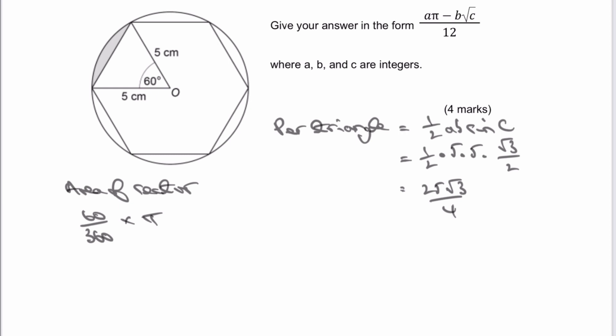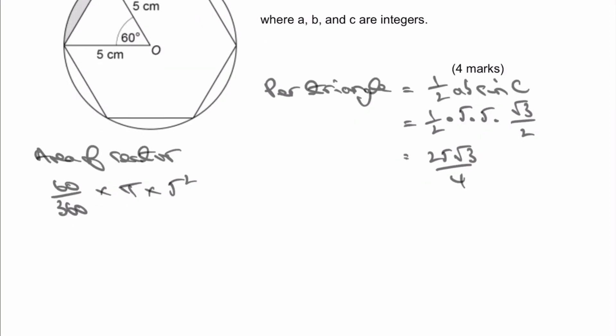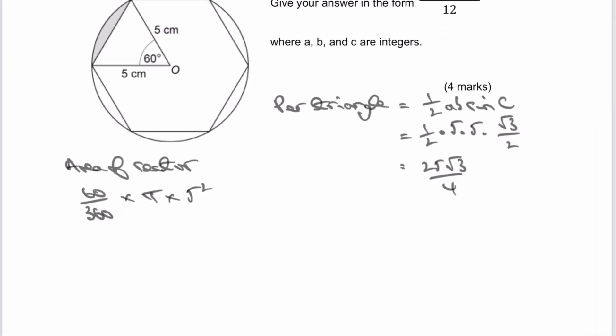Well, we've got the radius as five, so that's multiplied by five squared. And when I work that all out, put it in a calculator, however you do it, I'm going to get this as equal to 25 pi over six. So we've got two things now.